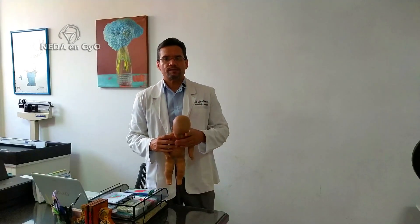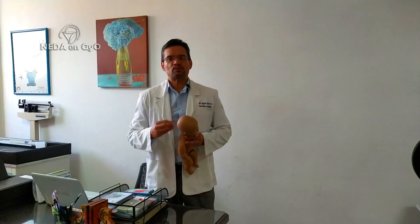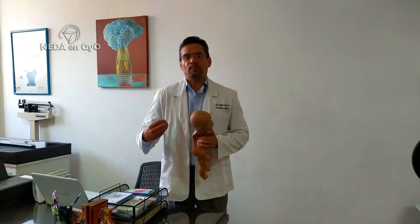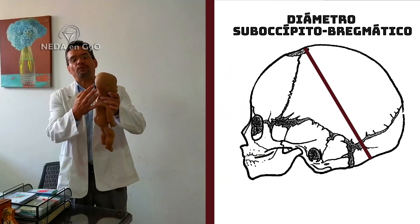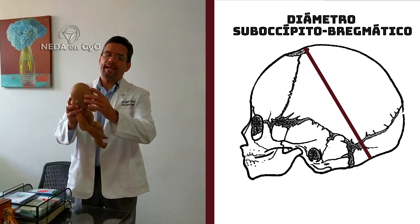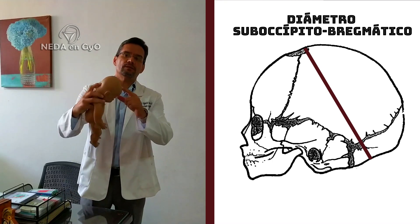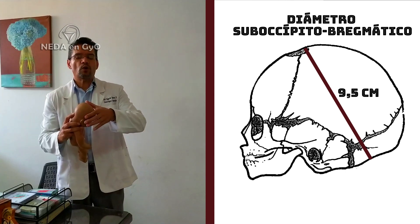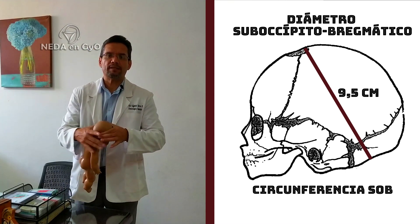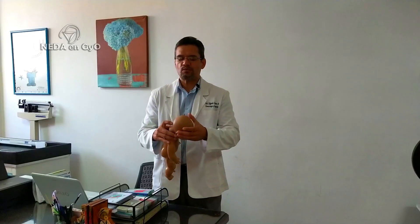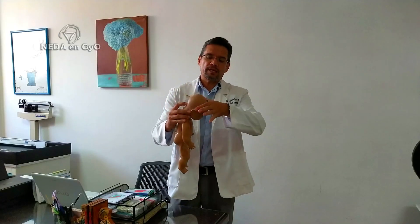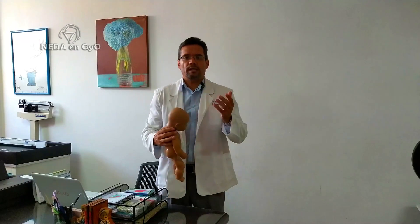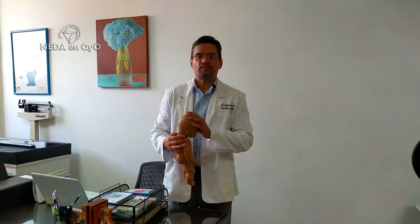Los diámetros anteroposteriores son varios. El primero que describimos es el diámetro suboccipitobregmático, el más importante, ya que rige la presentación cefálica de vértices, que es la más frecuente. Va desde por debajo del occipucio hasta la fontanela anterior y mide 9,5 cm. Forma una circunferencia llamada circunferencia suboccipitobregmática que mide 32 cm. Es el diámetro que rige la presentación cefálica de vértices.